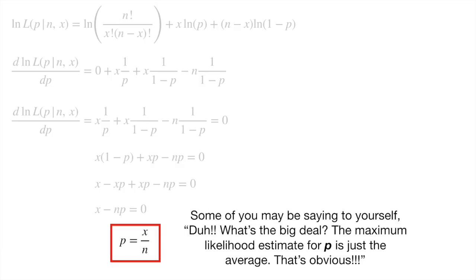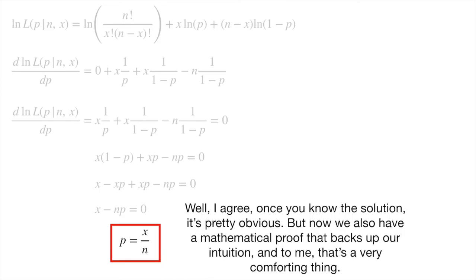Some of you may be saying to yourself, 'Duh! What's the big deal? The maximum likelihood estimate for p is just the average — that's obvious!' Well, I agree. Once you know the solution, it's pretty obvious. But now we also have a mathematical proof that backs up our intuition, and to me, that's a very comforting thing. Triple Bam!